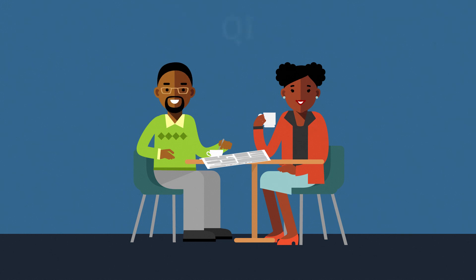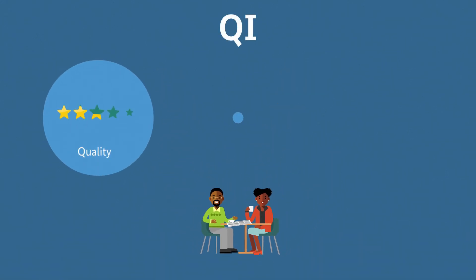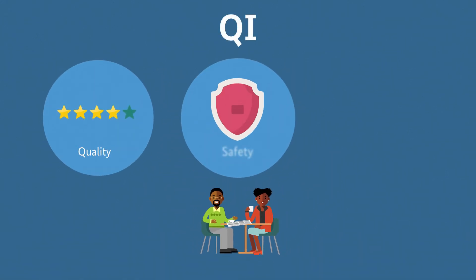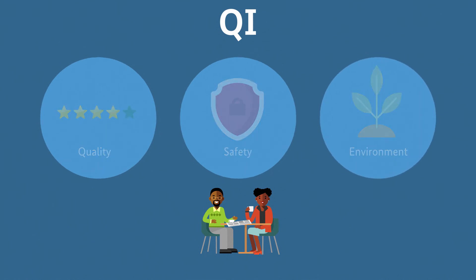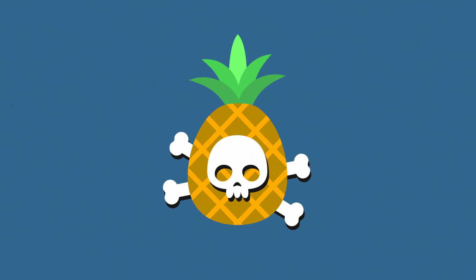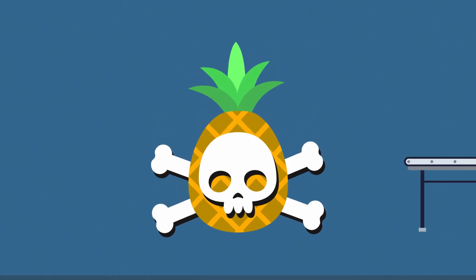The aim of QI is to support and enhance the quality, safety, and environmental soundness of goods, services, and processes. Take the pineapple story: there are standards about growing and treating pineapples to ensure that they can be consumed without any concerns.